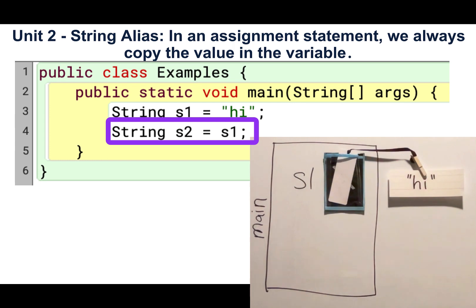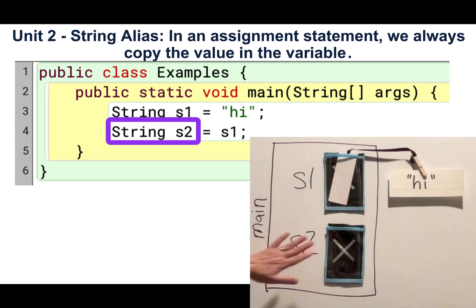Line 4 says string s2 gets s1. So on line 4, I create a variable named s2 of type string. That means that it's a variable that could reference a string object. After I create that variable named s2 of type string,